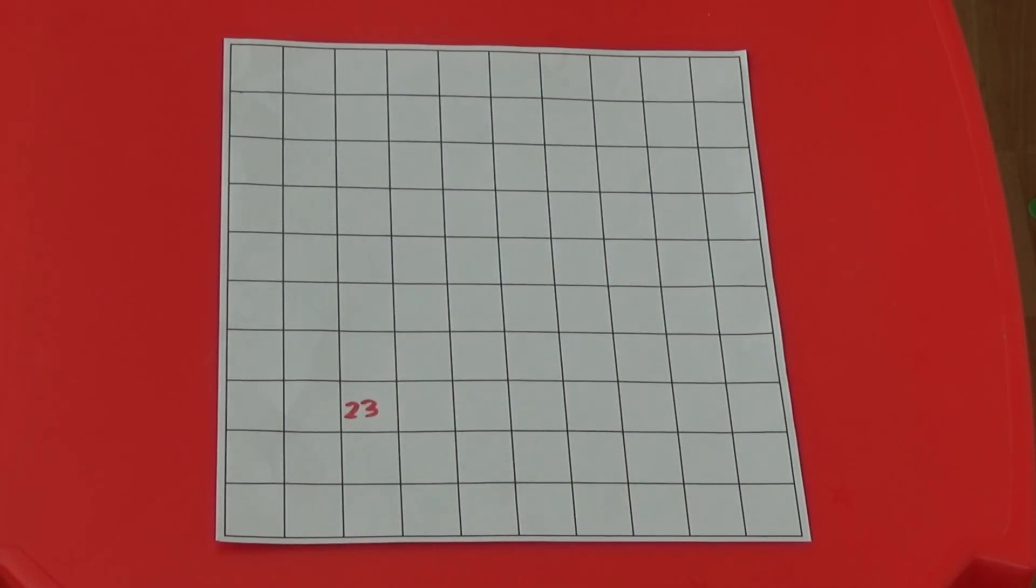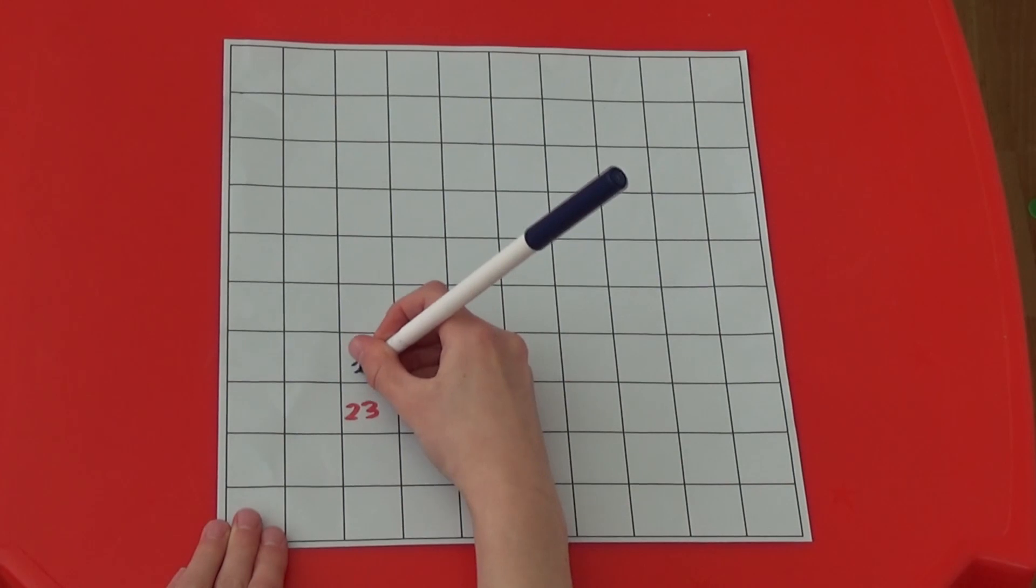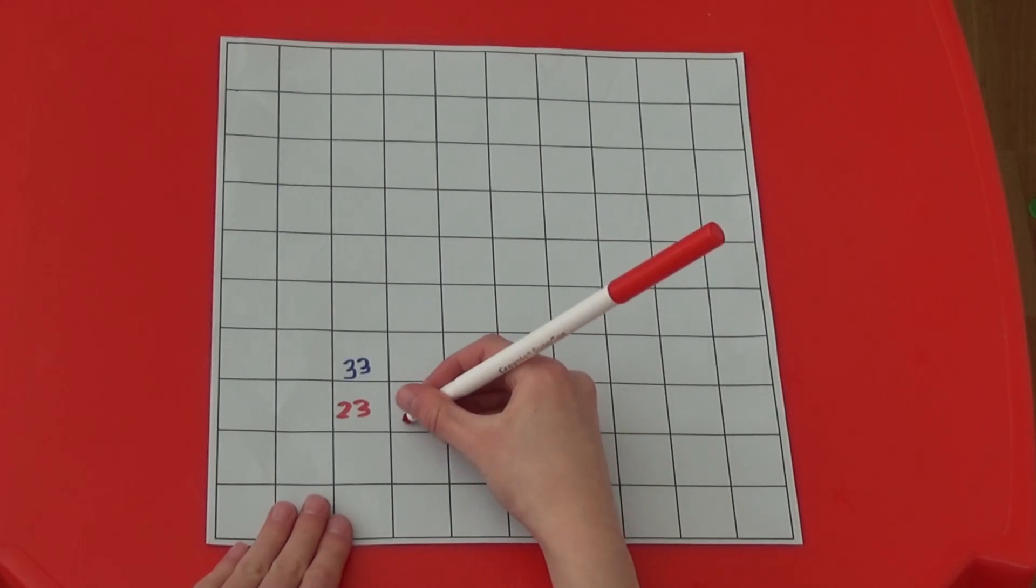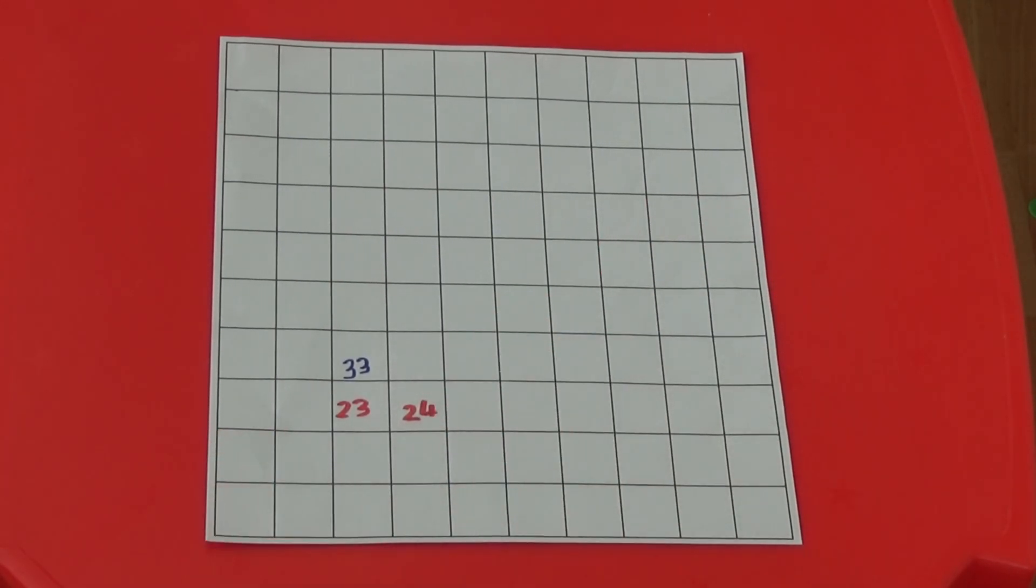The other player might decide to block me by putting 33 above. I might then decide to try and go for a horizontal line and write 24 in. They can then try to block my horizontal line by filling in 25.